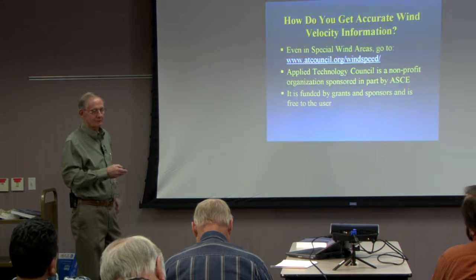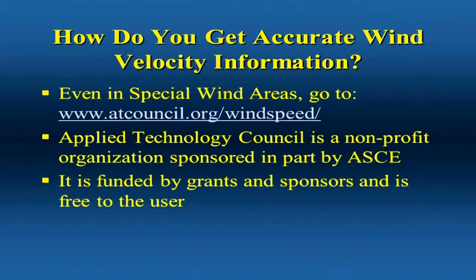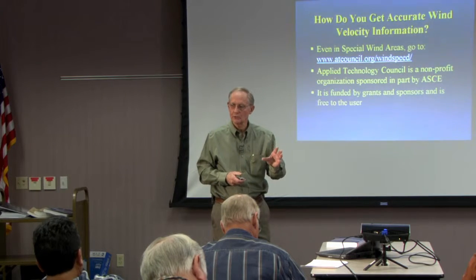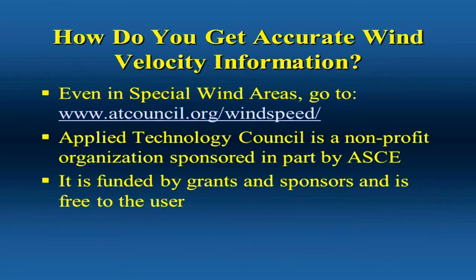So where did it go? Well, this is kind of a useful tool at atcouncil.org/windspeed. This organization was set up by engineers and designers primarily on the west coast initially, trying to define exactly where the earthquake hazards were and where buildings had to be designed differently from a seismic load standpoint. But eventually they also included wind, spreading wind and earthquake data across the U.S. This is funded in part by ASCE and several other organizations.